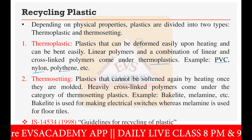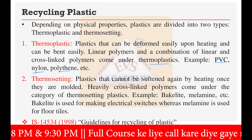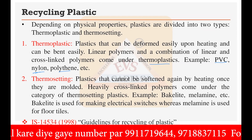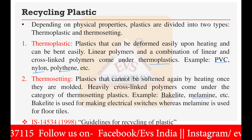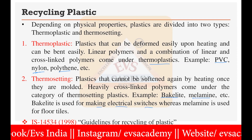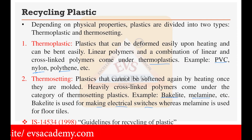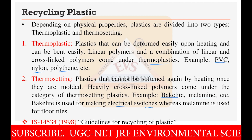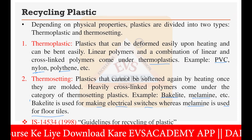Thermosetting plastics cannot be softened again by heating once they are molded — once formed, they burn directly rather than change shape. These are heavily cross-linked polymers. Examples include Bakelite and melamine. Bakelite is used for making electrical switches, and if exposed to excessive heat, the switches can burn out and cannot be remolded or reused. Melamine is used for floor tiles.